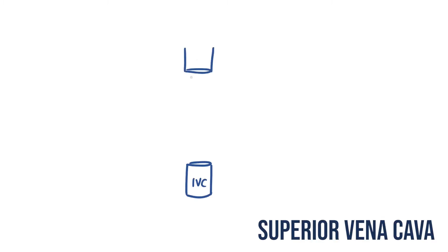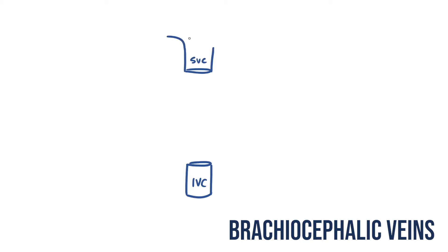To draw this out I'm going to start with the venae cavi. So I'll add the inferior vena cava down here, and then the superior vena cava, plus the brachiocephalic veins that form it, up here.